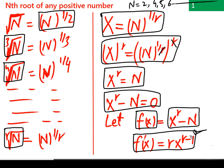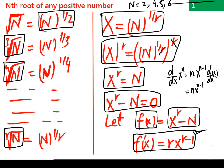Let me explain how we got that derivative. Starting from the general form: the derivative of x^n with respect to x is n·x^(n−1). If we replace n with r, we get r·x^(r−1). The term n in our function f(x) = x^r − n is a constant, so its derivative is zero, giving us f'(x) = r·x^(r−1).